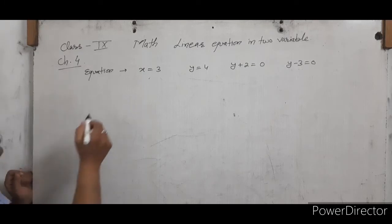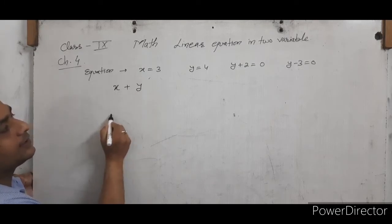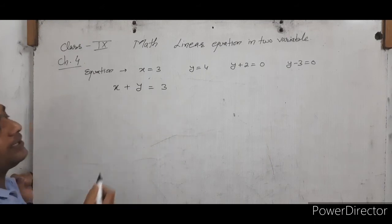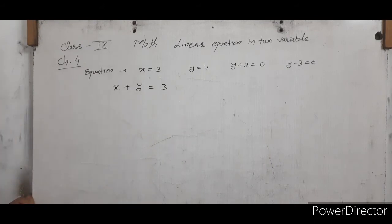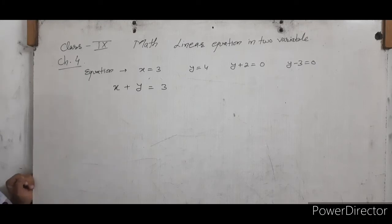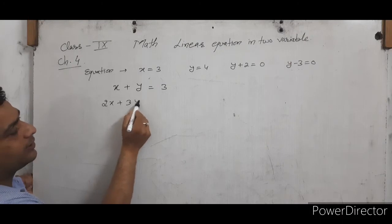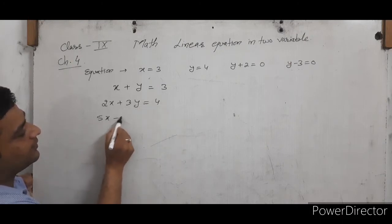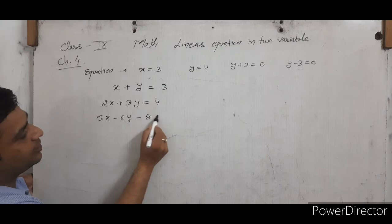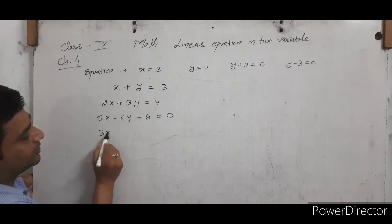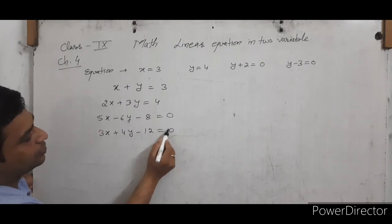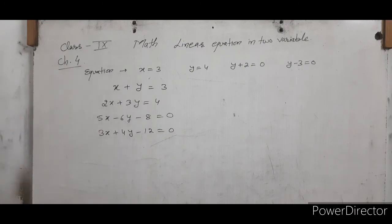If we use two variables X and Y in preparing a linear equation, then it is called a linear equation in 2 variables. For example: 2X plus 3Y equals to 4, or 5X minus 6Y minus 8 equals to 0, or 3X plus 4Y minus 12 equals to 0. All these are called linear equations in 2 variables.